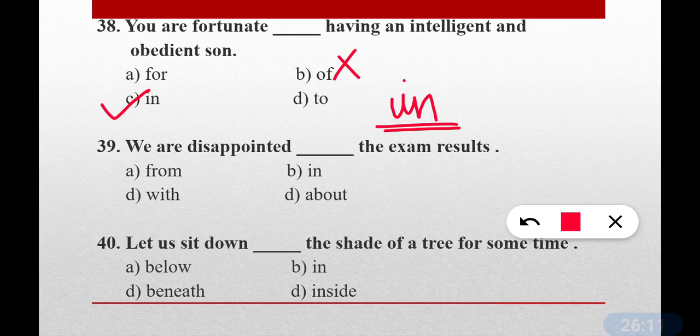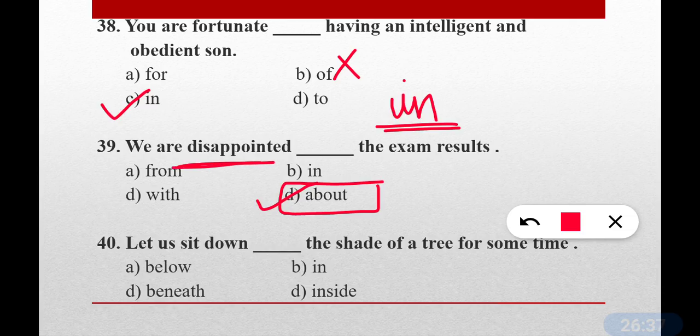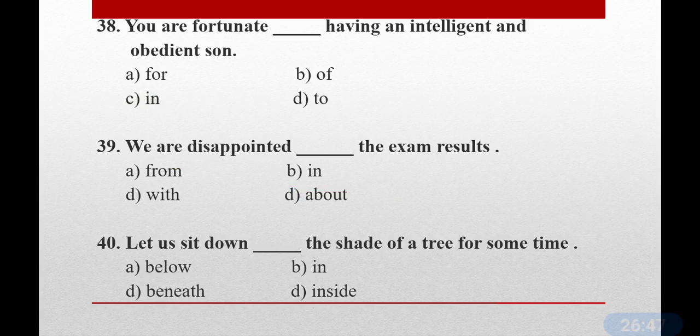Question number thirty-nine: We are disappointed dash the exam results. The correct answer is option D — 'about'. Disappointed is always followed by 'about' — it's a fixed preposition. We are disappointed about the exam results. Disappointed about something — always use about.